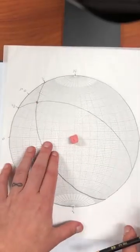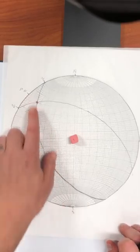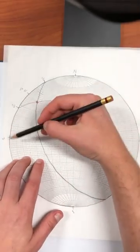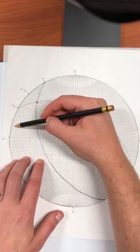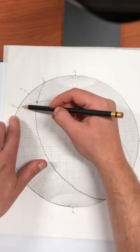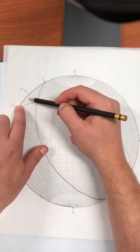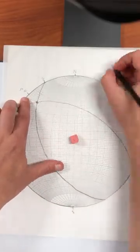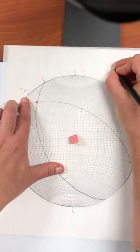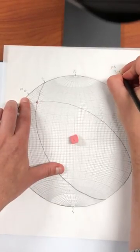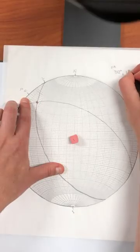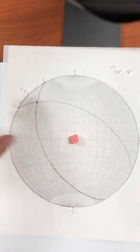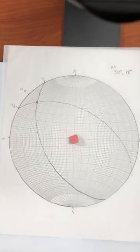Rotate back to north. And then I figure out whatever that is for the trend. So this is 270, 280, 290, 300, 310, 312. So the fold axis is trending about 312 degrees, plunging 18 degrees.